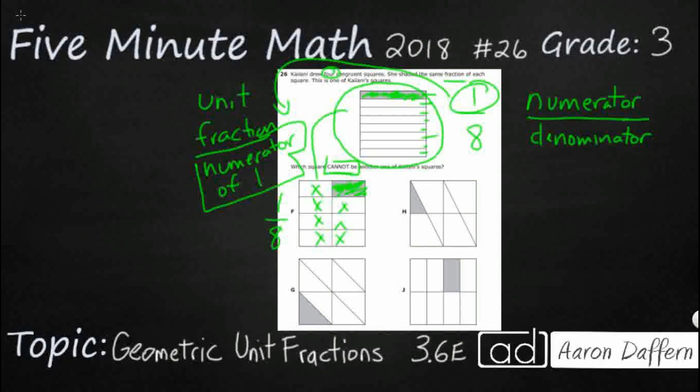So that is a unit fraction of one-eighth. Even though it looks different than up here, it's the same fraction. And what you could do is think about this shaded piece is the same size as this shaded piece. If you were to cut this shaded piece in half, kind of like right through there, and then put this side over here, you'd get that long skinny piece. So F looks like it's going to work for us.